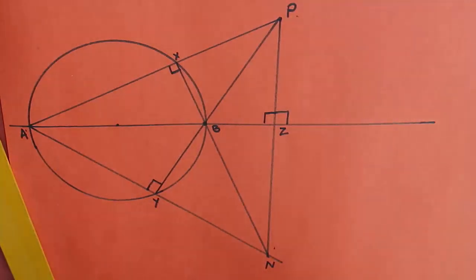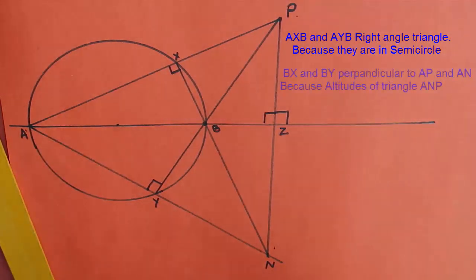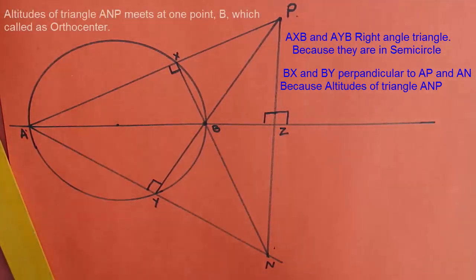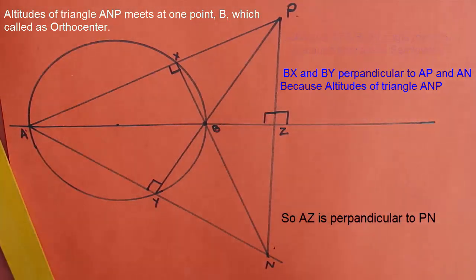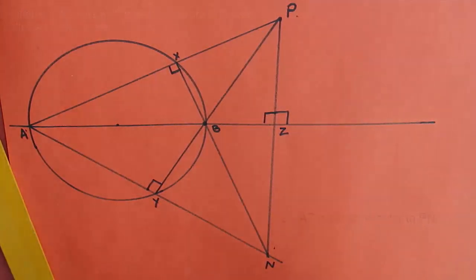AXB and AYB are right triangles as they are triangles in a semicircle. So altitudes BX and BY of triangle APN meet at B, which is also called the orthocenter. So the third altitude AZ will also pass through B, and therefore line PN is perpendicular to the original line AZ that we wanted.